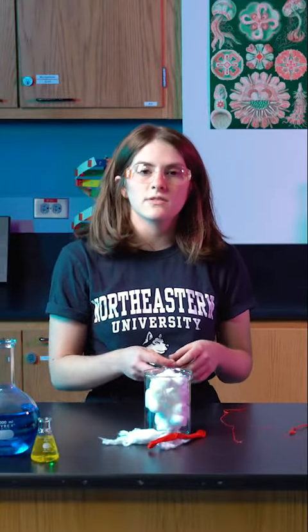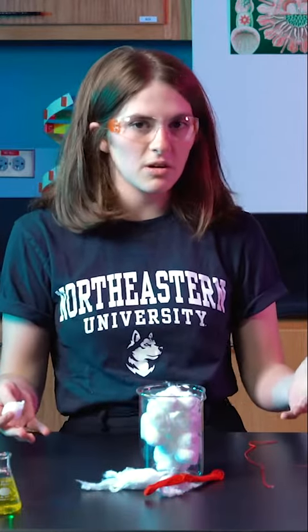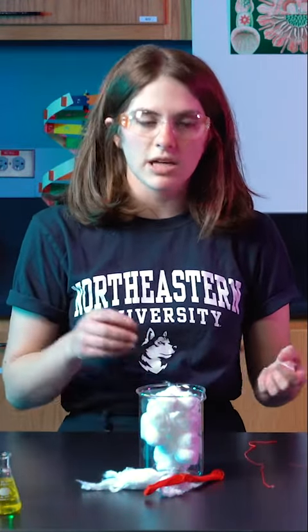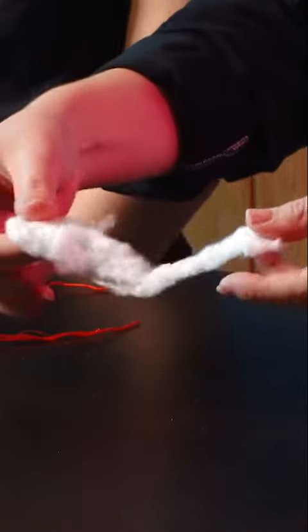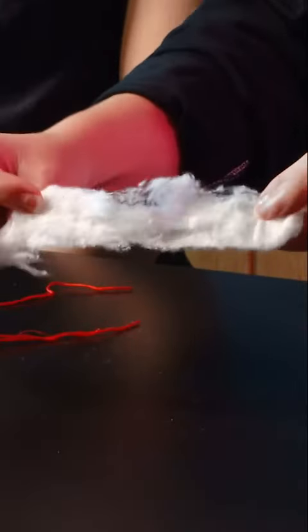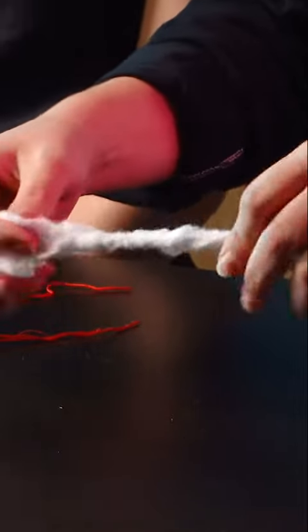So instead, we have to impart this length on our own as humans through processes like spinning fibers. So if we unroll our cotton ball into the sheet, in order to make it stronger, just like the synthetic fibers, we want to twist them together.